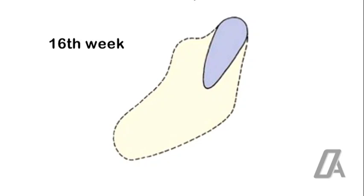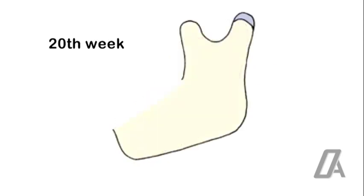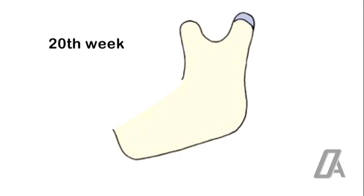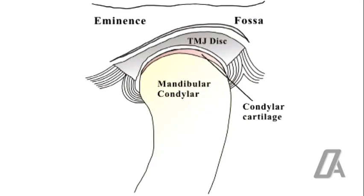Initially the condylar cartilage appears as cone or carrot-shaped, the large end of the cone assuming the position of future condyle. By 20th week the wedge of cartilage is connected to bone except for a thin layer of articular surface. Condylar cartilage covers the surface of the mandibular condyle at the TMJ.